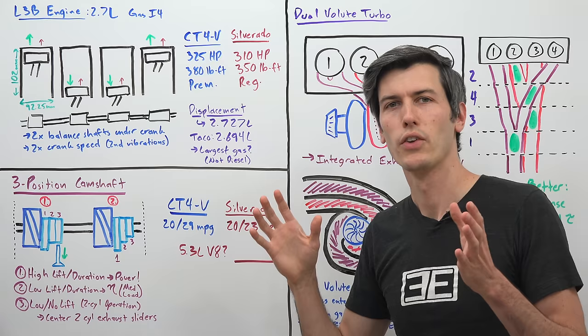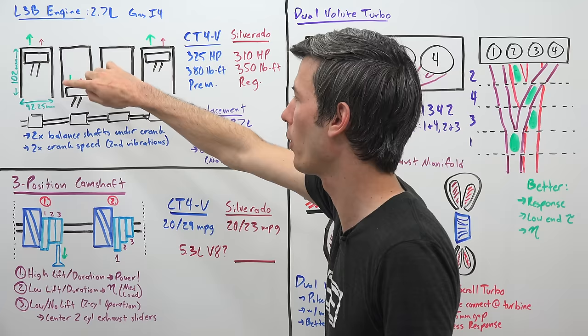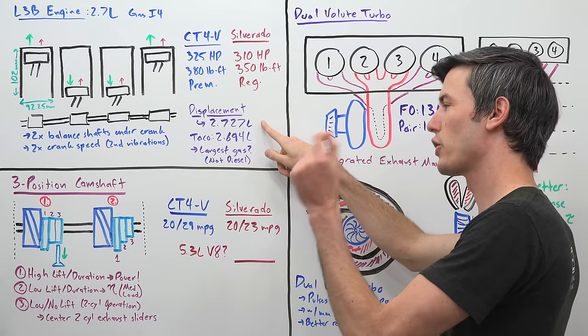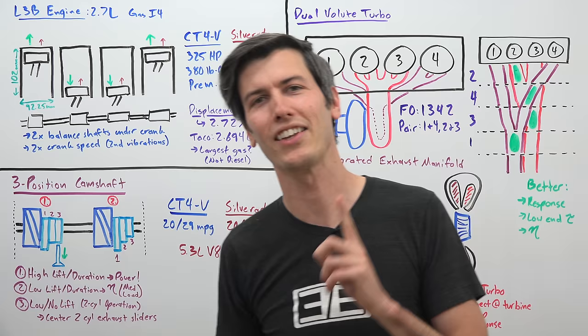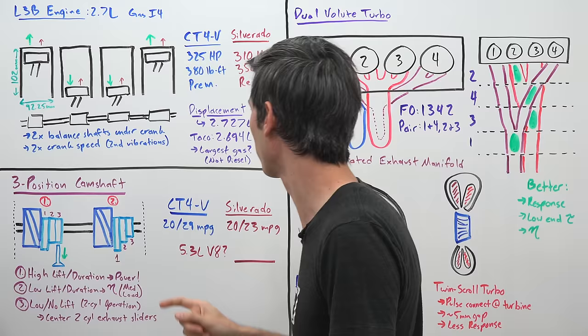So the L3B engine is an inline four-cylinder. It has a stroke of 102 millimeters and a bore of 92.25 millimeters which gives it a total displacement of 2.727 liters, which I believe is the largest gasoline-powered four-cylinder in a road car sold today. Historically there definitely have been some larger gasoline four-cylinders and there are definitely larger diesel four-cylinders sold today, but I think that is the largest gasoline one.